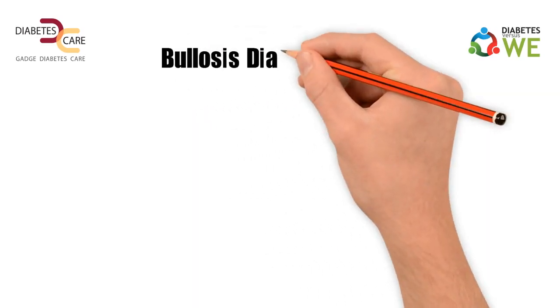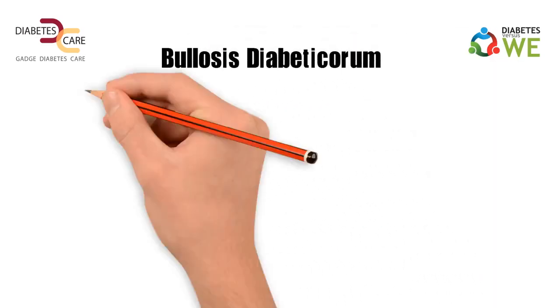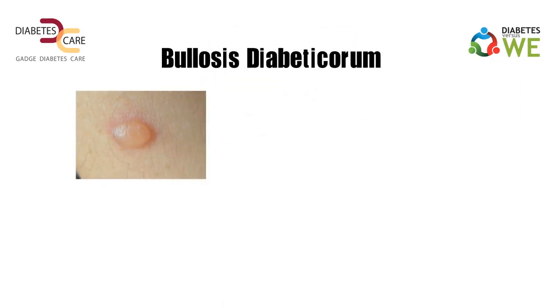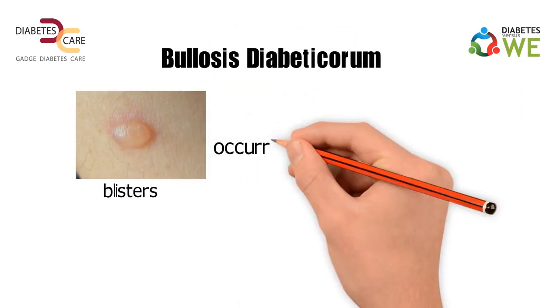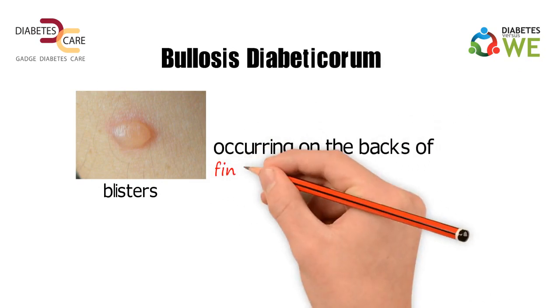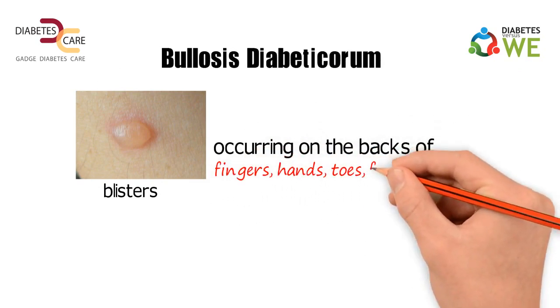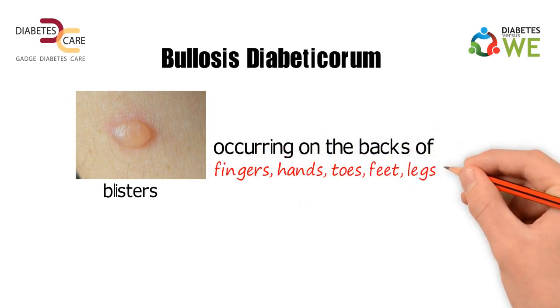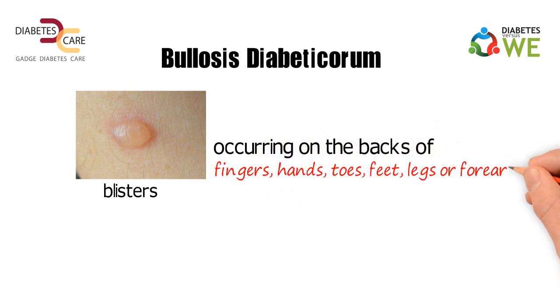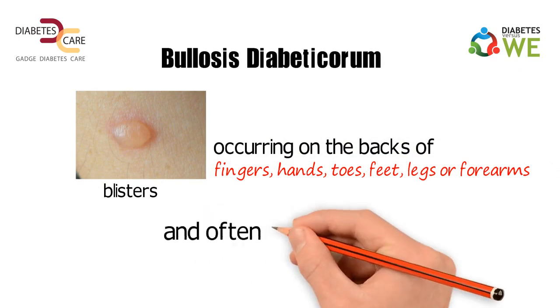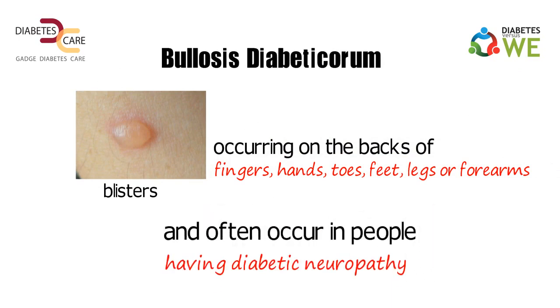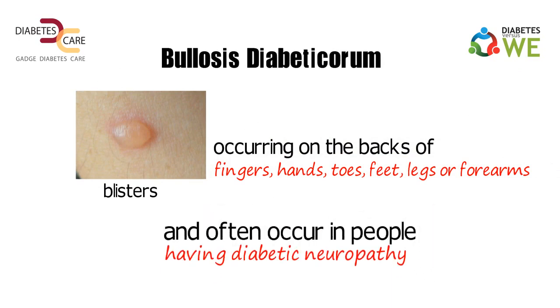Bullosis diabeticorum: these are diabetic blisters occurring on the back of fingers, hands, toes, feet, legs, or forearms, and often occur in people having diabetic neuropathy.